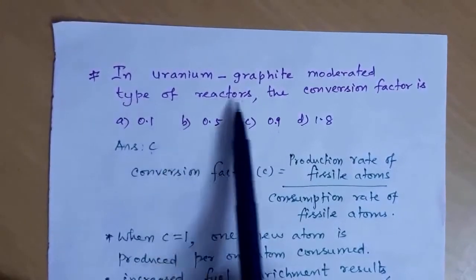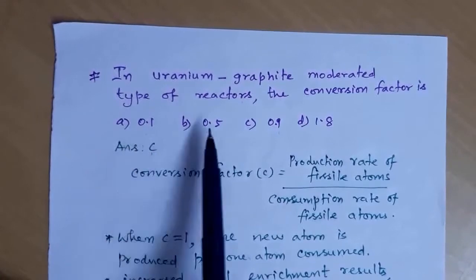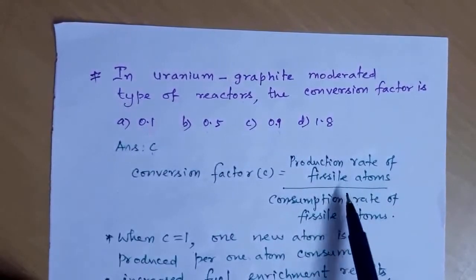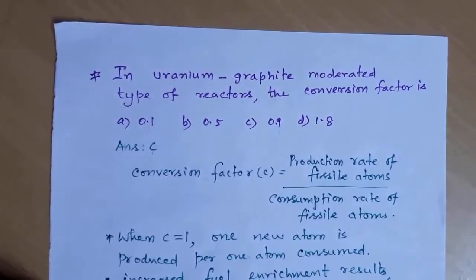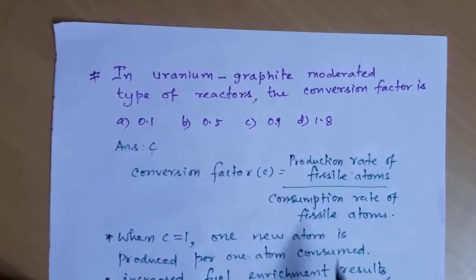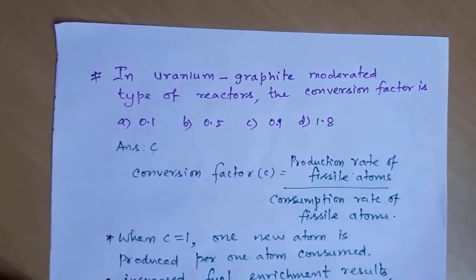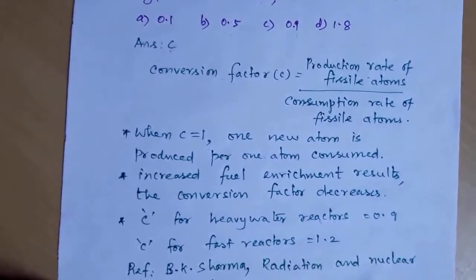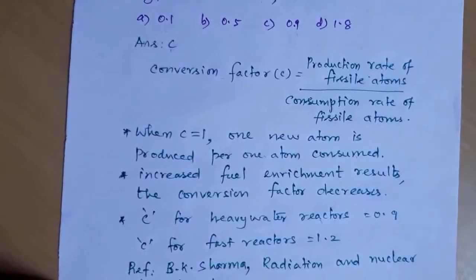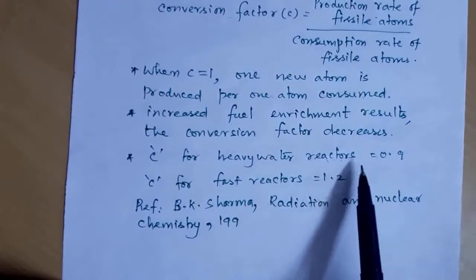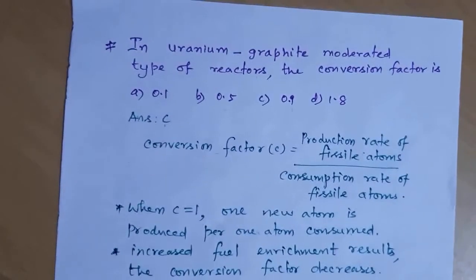Next question: in uranium graphite moderated type of reactors, what is the conversion factor? The conversion factor is the ratio of the production rate of fissile atoms to the consumption rate of fissile atoms. When these two rates are equal, C equals 1 — one new atom is produced for every one consumed. The conversion factor C for the heavy water reactor is 0.9, so the answer is option C.